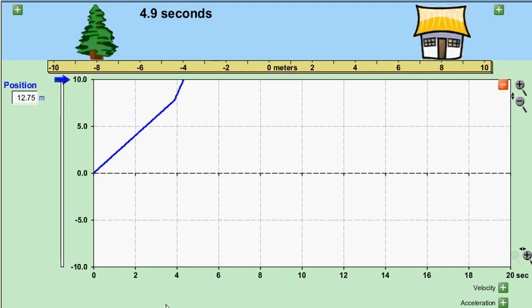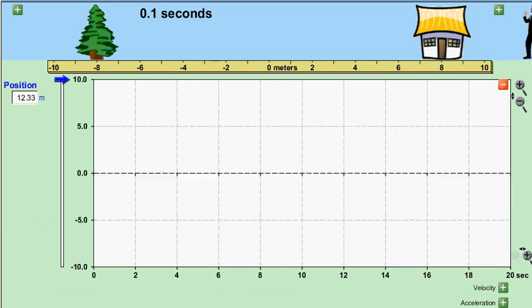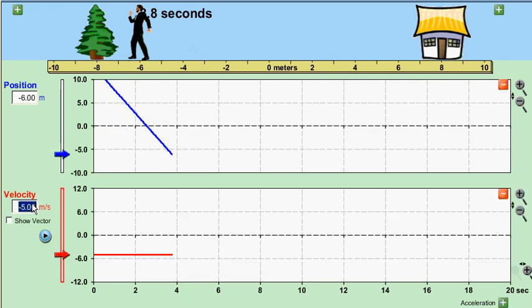Now, if we clear it and give him a negative velocity, now we'll see that he comes back from right to left. And then if we stop him and give him zero velocity, we get a horizontal line.